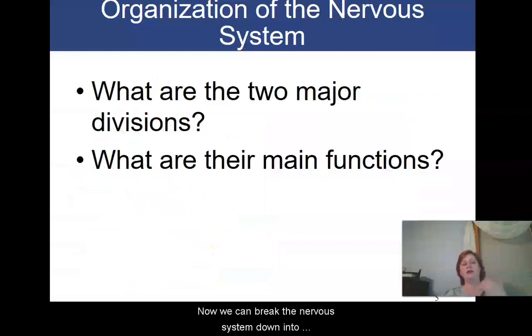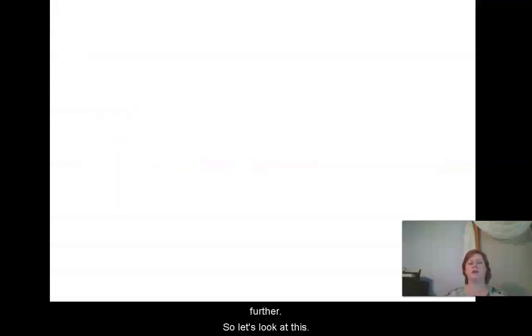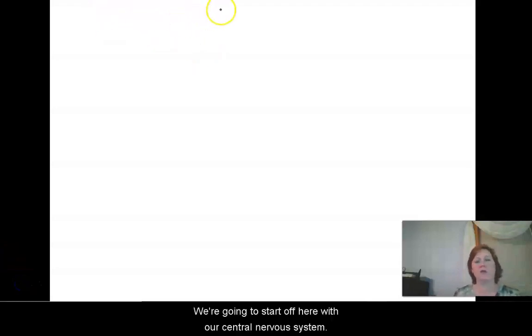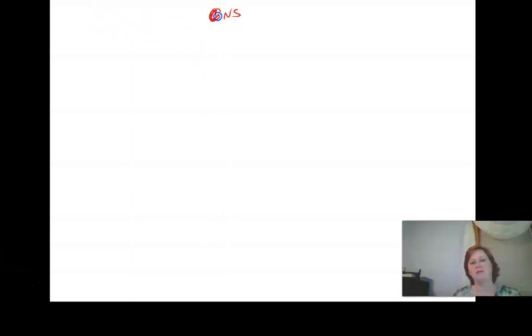Now we can break the nervous system down into two major divisions, and then we really want to break those down a little bit further. So let's look at this. If you have your notes or you've pulled them up, then look at the very first page of the notes which has kind of a flow chart of the divisions of your nervous system and we're going to go over those right now. Okay, so let's look at the divisions of the nervous system. We're going to start off up here with our central nervous system, which is the brain and spinal cord.